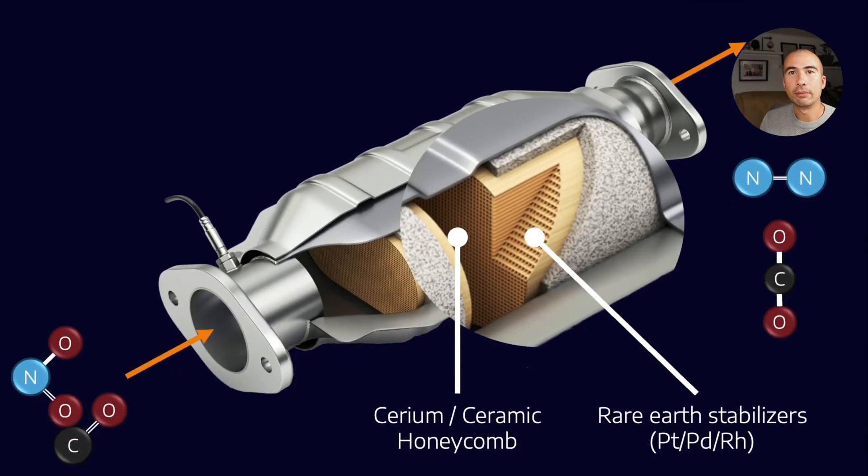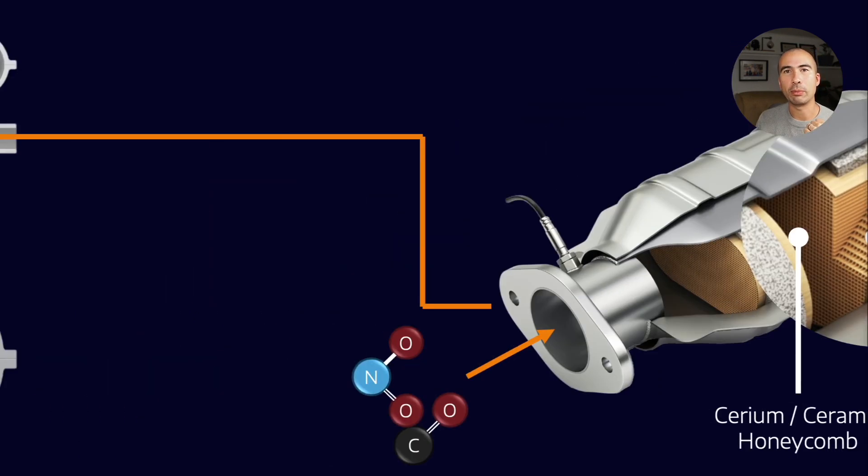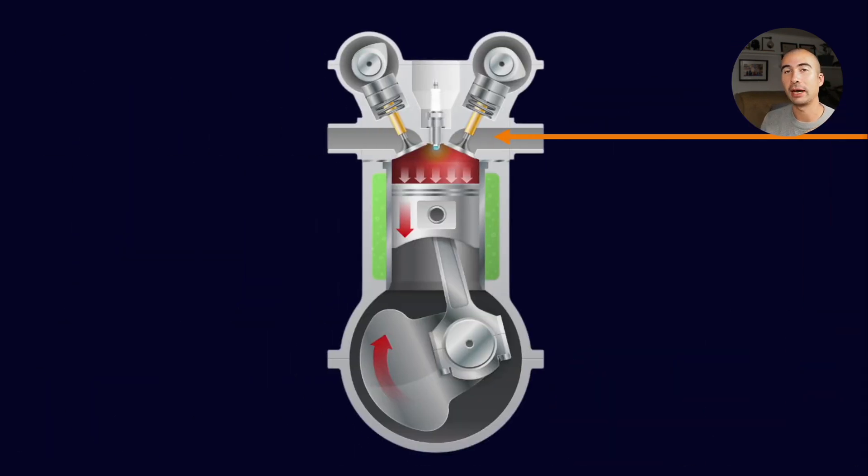And that's why catalyst fouling has become such an important issue as we try and balance lack of maintenance on the part of the consumer as well as clean exhausts. That's the balance that we're trying to strike. And that's why we're reducing ZDDP in oil formulations. Now, what does this have to do with the oil? If we backtrack from the catalyst, we go back through the exhaust system, we make our way back to the exhaust part of the engine.